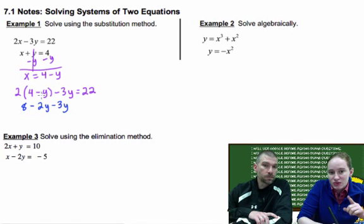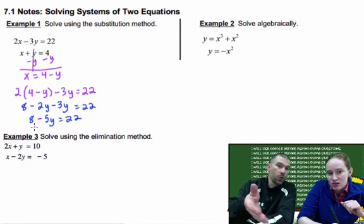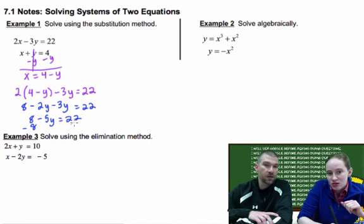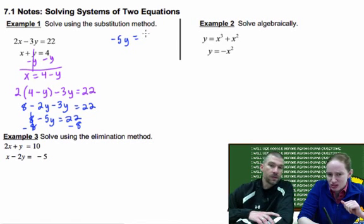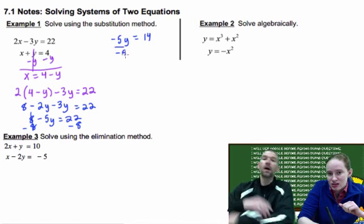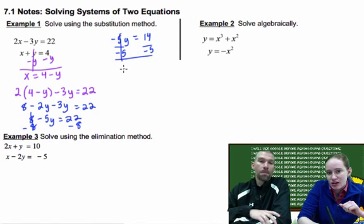So I substituted the 4 minus y into the x for the first equation. So now to finish solving this, I distributed. Now I have like terms that I have to add and just put them all together. Now it's an Algebra 1 question and we solve that sucker for y and we'll get a final answer. Negative 5y equals 14, is that right? 22 minus 8 is 14, I believe so. Oh no, a fraction. Oh my gosh.